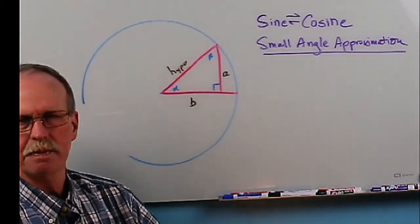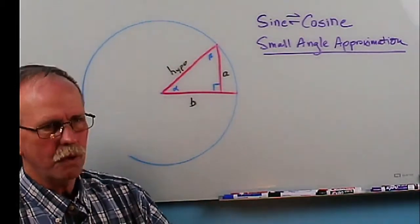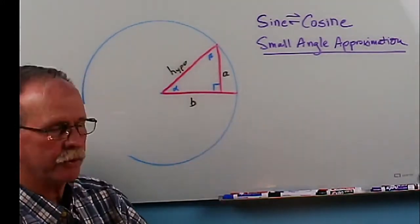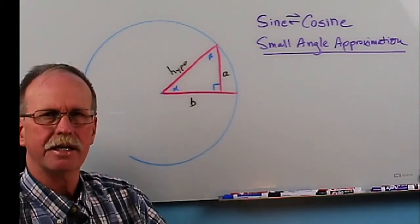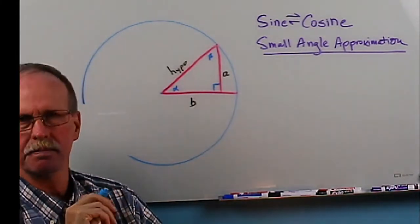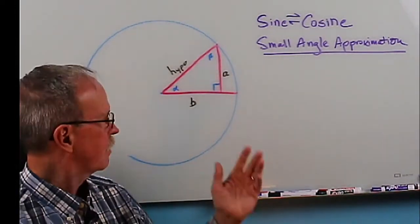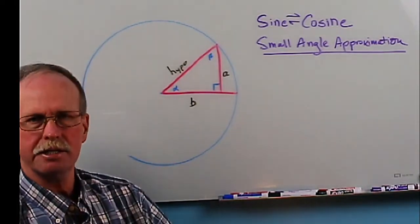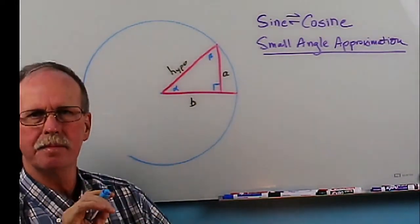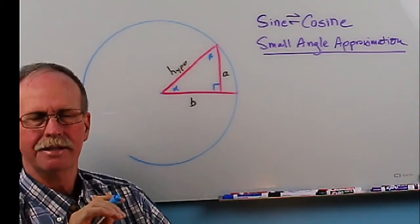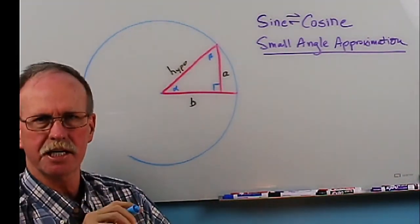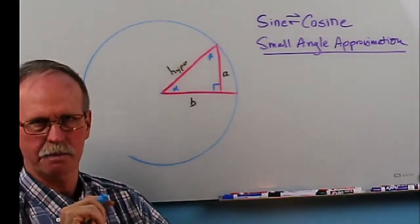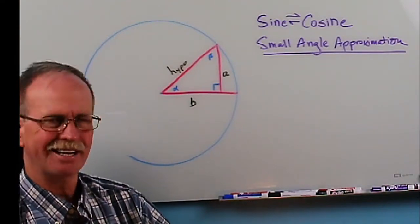Hi everyone and greetings from northern Michigan. This is Bob the Science Guy. I woke up this morning and got the urge to do some math. Let's talk about the relationship between sine and cosine and something called the small angle approximation. I'll put it up on the board for the didactic portion, then we'll go over to the desk and use the slide rule to demonstrate it physically so you can see the relationships between sine, cosine, tangent, and most importantly the small angle approximation.